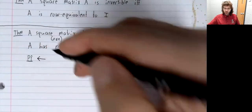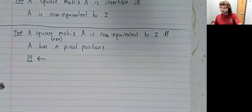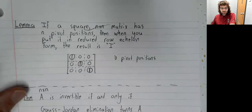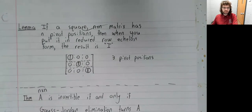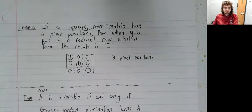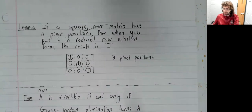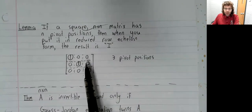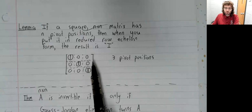We've gone in this direction. This is from a previous video that if a square n by n matrix has n pivot positions, then when you put it into reduced row echelon form, you get the identity matrix. I mean, I say we proved it—we provided an argument for it.